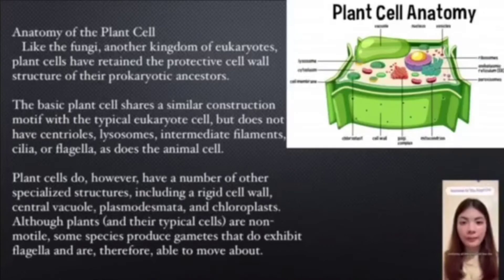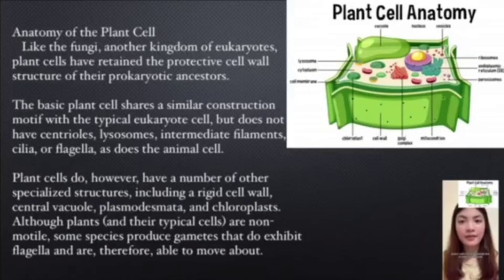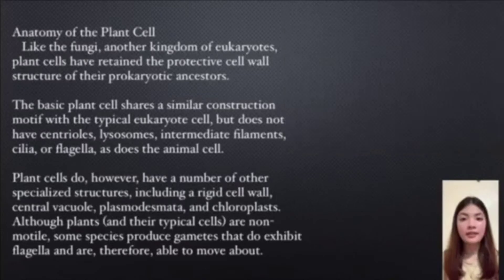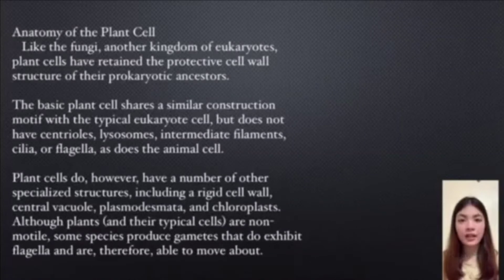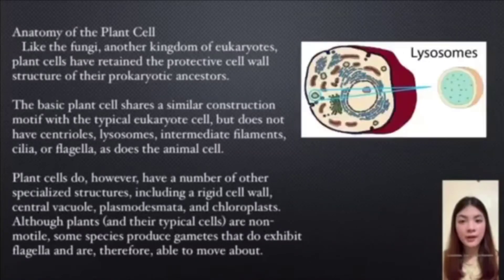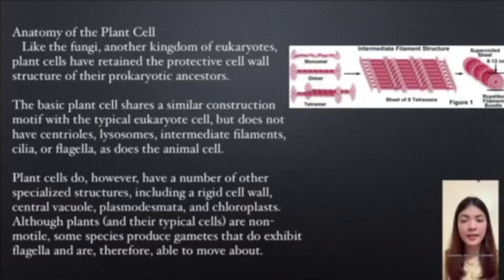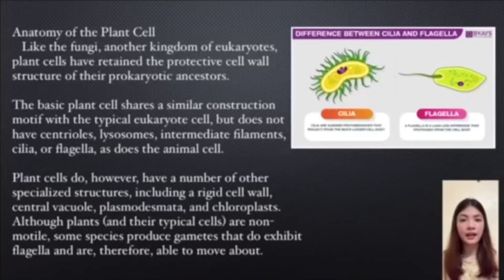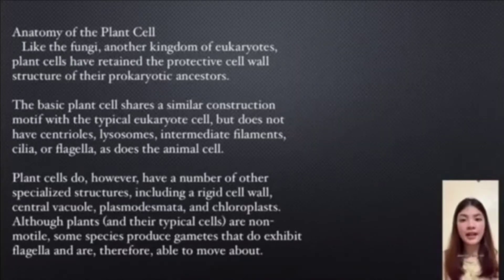Anatomy of the plant cell. Like the fungi, another kingdom of the eukaryotes, plant cells have retained the protective cell wall structure of their prokaryotic ancestor. The basic plant cell shares a similar construction motif to the typical eukaryote cell, but does not have centrioles, lysosomes, intermediate filaments, cilia, or flagella, as does the animal cell.